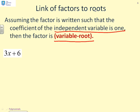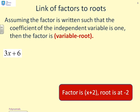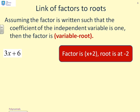Here, I've got a polynomial 3x plus 6, and I can write that as 3 times (x plus 2). So in this case, the factor is going to be x plus 2, and the root is at minus 2. So there you'll notice if I repeat it, the factor is x plus 2, the root is at minus 2.